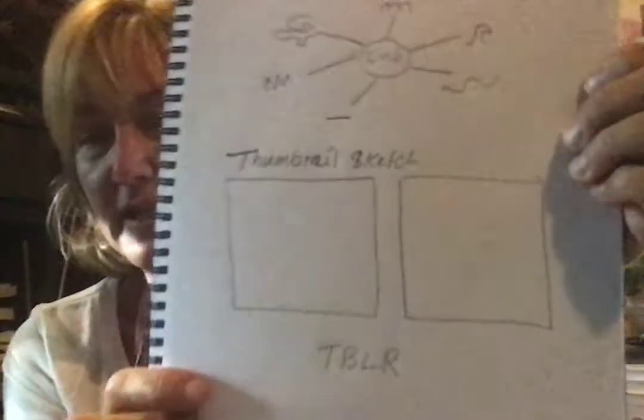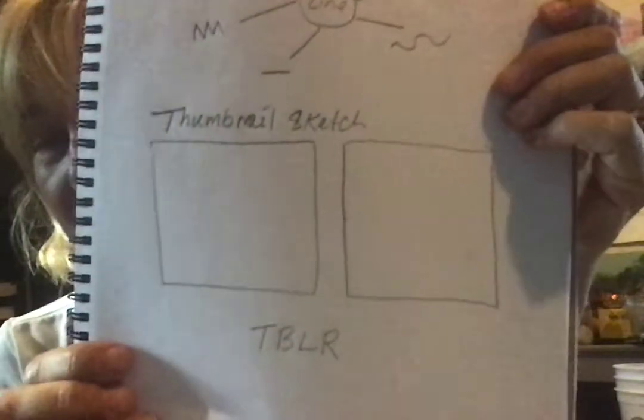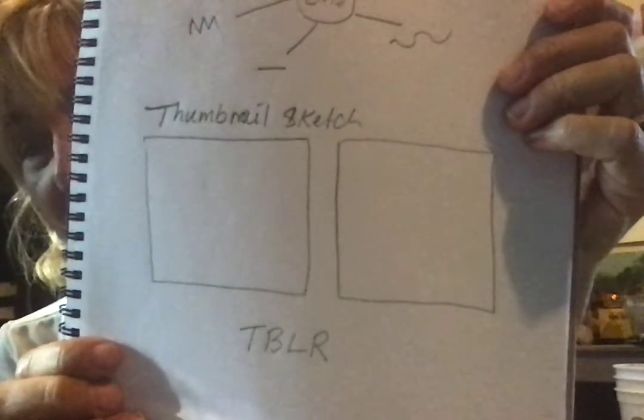And in that area, I'm going to take two or three lines. I'm going to do what I call TBLR — I'm going to take my lines and touch the top, the bottom, the left, and the right. I'm going to do another video close-up so you can see that.